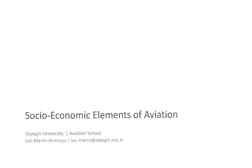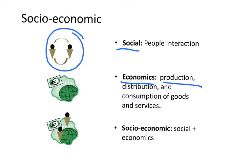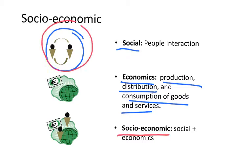This video talks about the socio-economic elements of aviation. When we talk about social, we mean the interaction of people. When we talk about economics, we mean the production, the distribution, and the consumption of goods and services. When we talk about socio-economics, it's the social part plus the economical part.